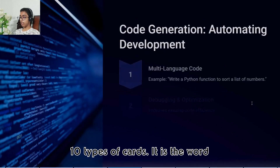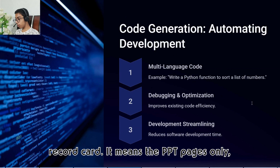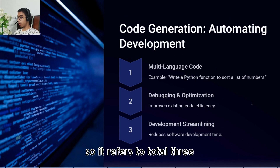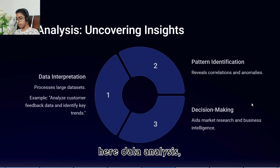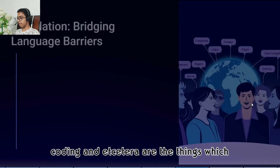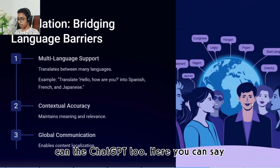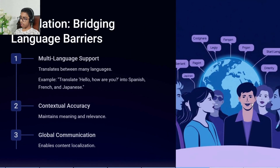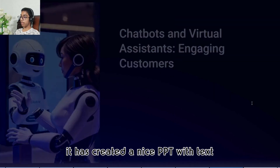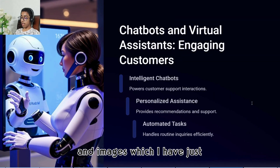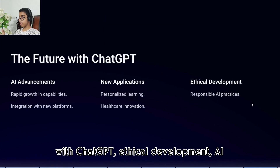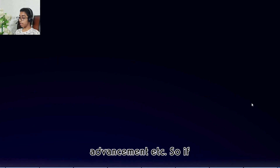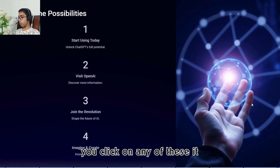It has created a total of 10 cards — 'card' is the word for PPT pages. The cards cover topics like data analysis, coding, and other things ChatGPT can do. It has created a nice PPT with text and images based on what I wrote in the prompt, including topics like the future with ChatGPT, ethical development, and AI advancement.